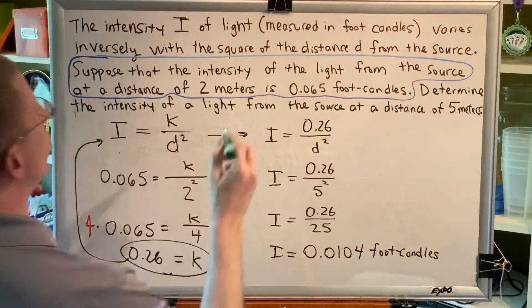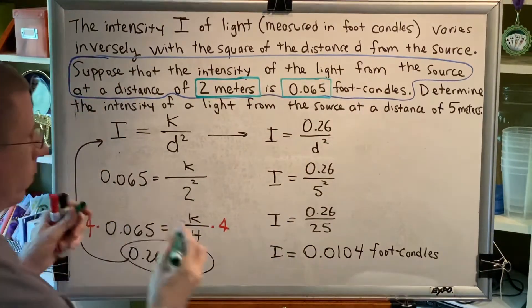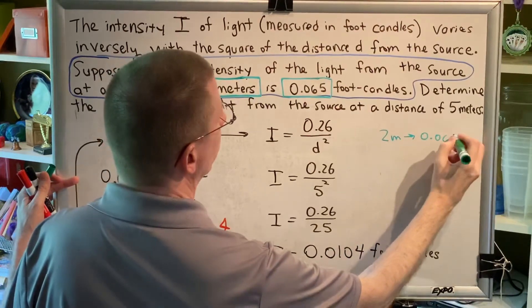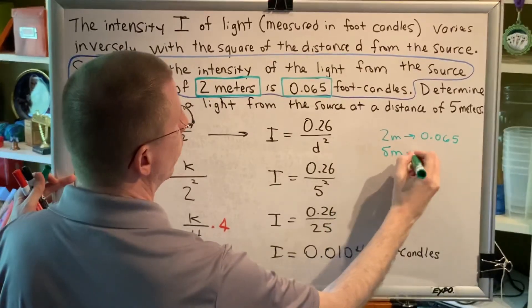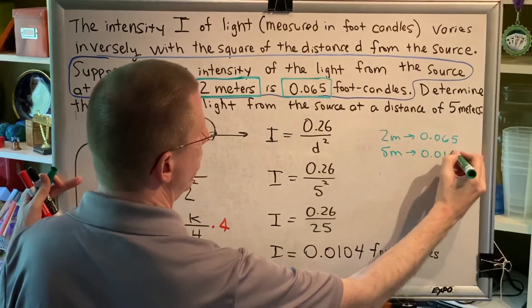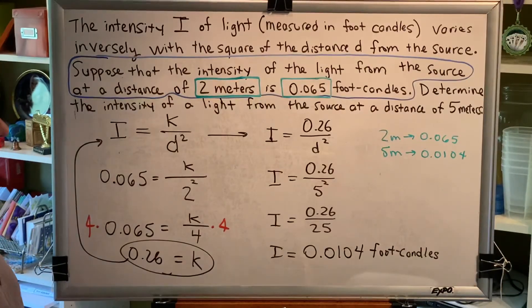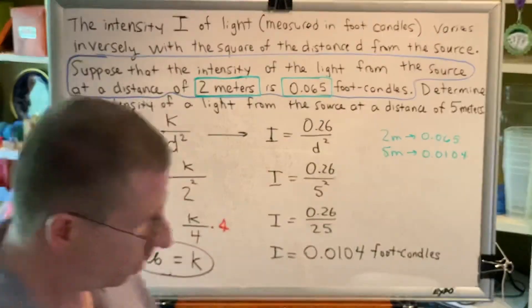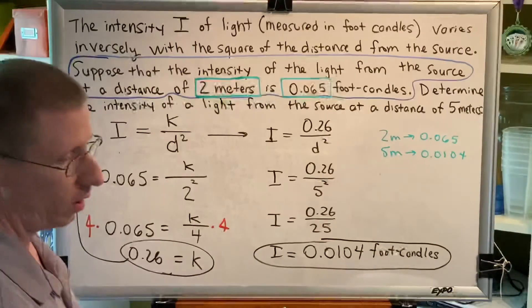When the distance was 2 meters, the light intensity was 0.065. And when we increased the distance to 5 meters, the light intensity became 0.0104. So, when you increase the distance, we would expect the intensity to go down. Did it? Yes. 0.06 to 0.01. All right. So, that gives me confidence that our final answer is correct. And with that, we are done with this problem.